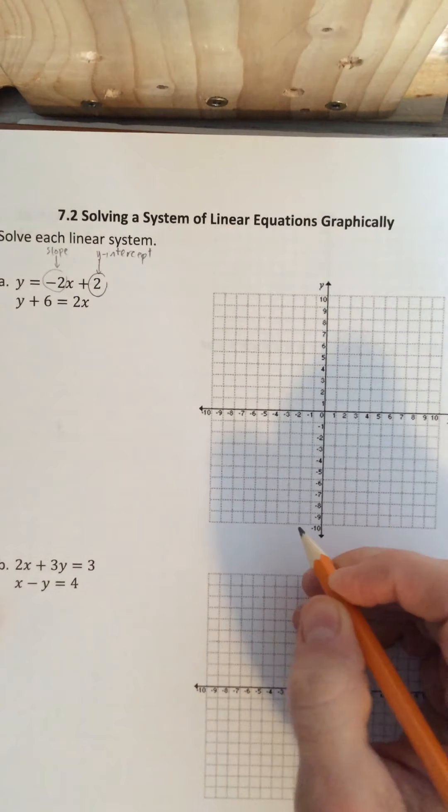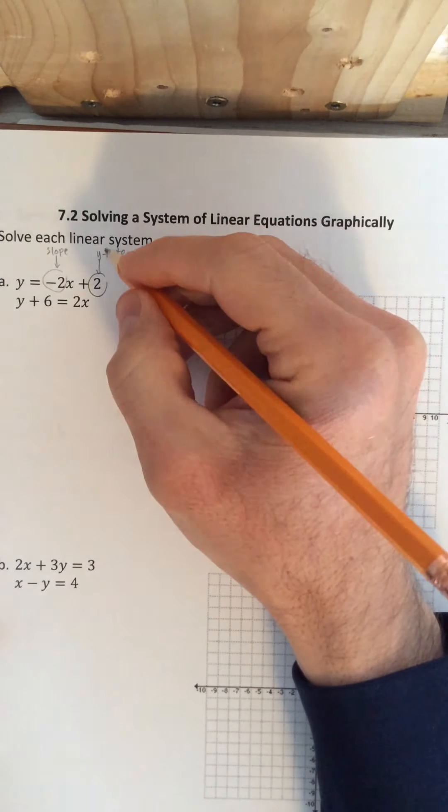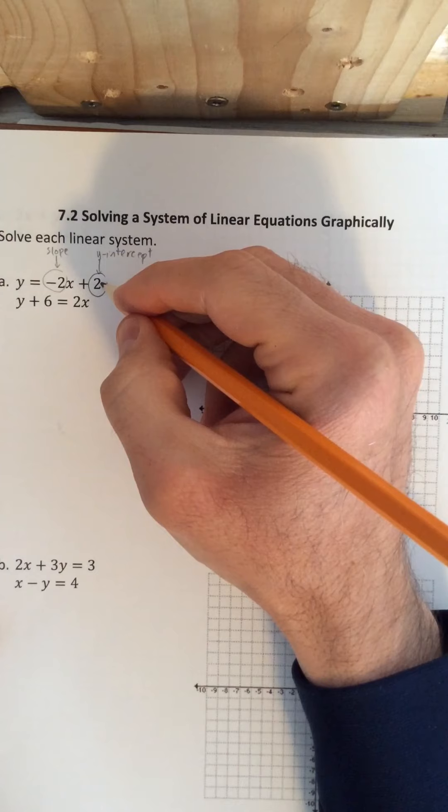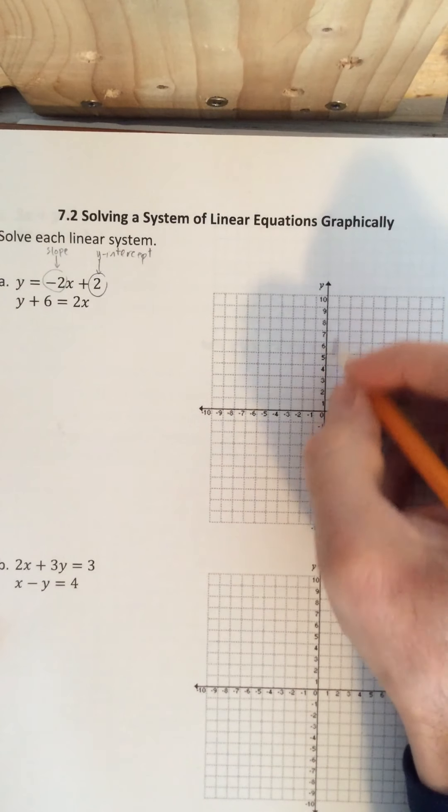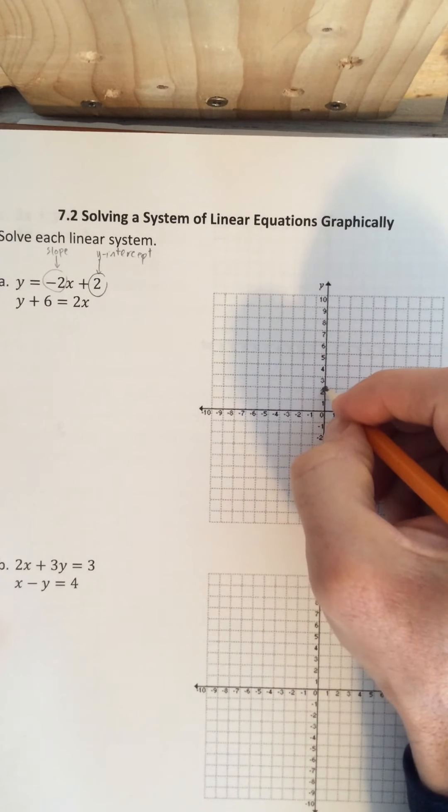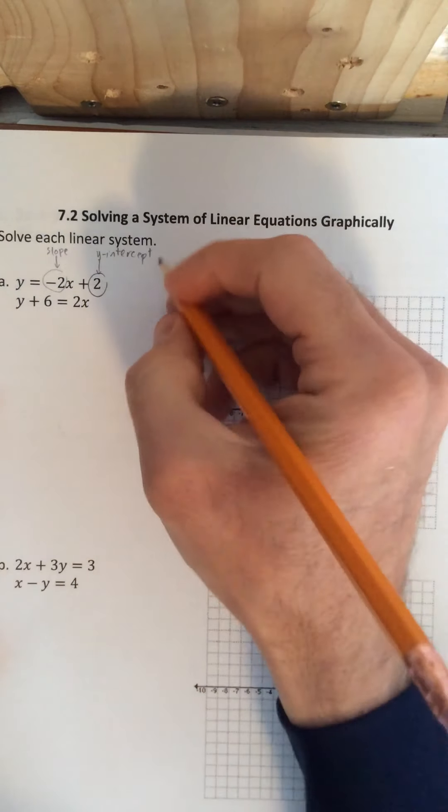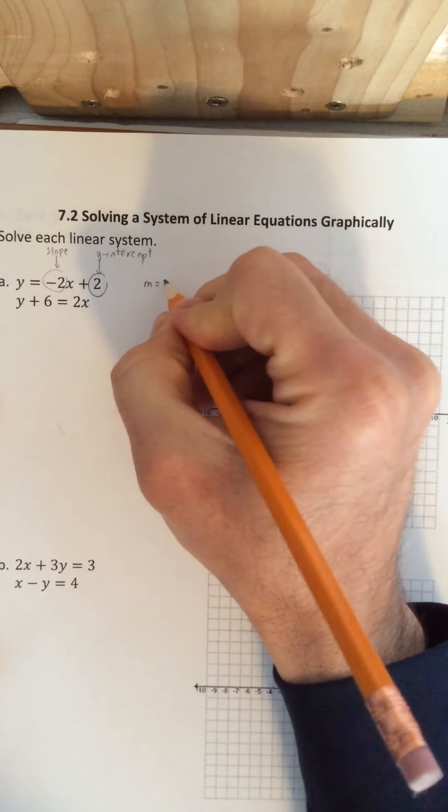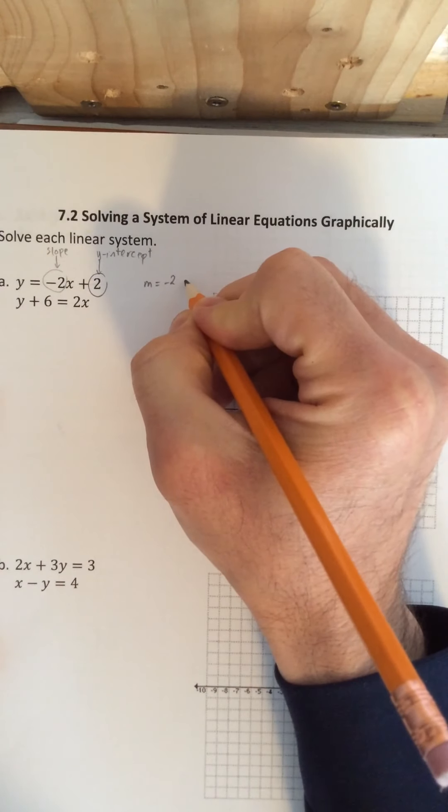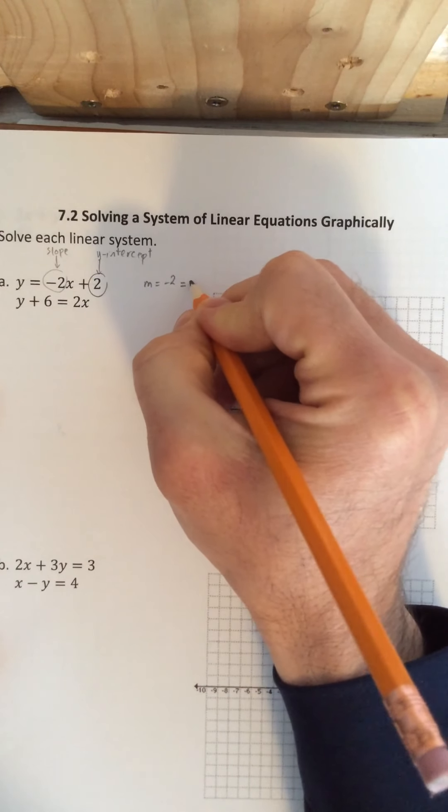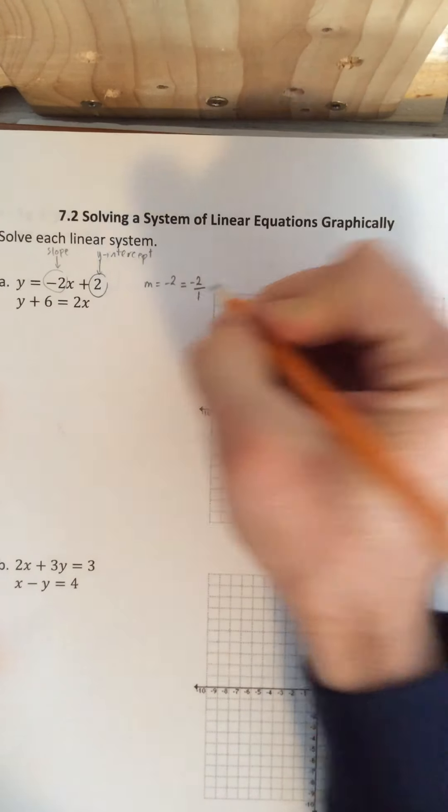So when we go to graph this linear equation our starting point or our initial value is 2 along the y-axis. So this is our beginning point and then our slope is negative 2. Now this slope, although it is negative 2, if we want to write it as a rise and a run would be negative 2 over 1.